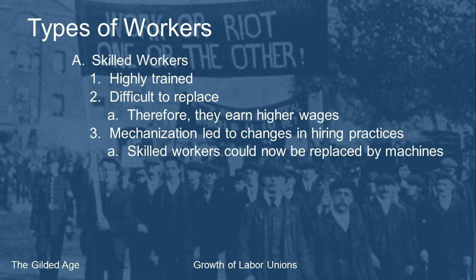One example is cigar rollers. Someone who rolls a cigar by hand is a skilled worker — if you roll it too tight you can't draw air through it, too loose and it burns too fast or falls apart. There's an art form to rolling a cigar well. During the Gilded Age, someone invented a small machine no bigger than a laptop. You stretched a tobacco leaf on it, measured the tobacco, turned a hand crank, and it rolled the cigar perfectly every single time.